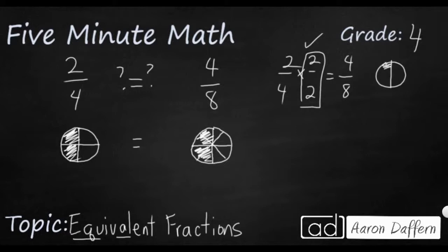The reason is that two over two is really just one. Anytime you multiply anything by one, it doesn't change — three times one is three, eighteen times one is eighteen. So I just made my one look like two halves, which means I didn't really change it. I just made my two-fourths look different, but it's the same amount, which is what we've already proven by our drawing.